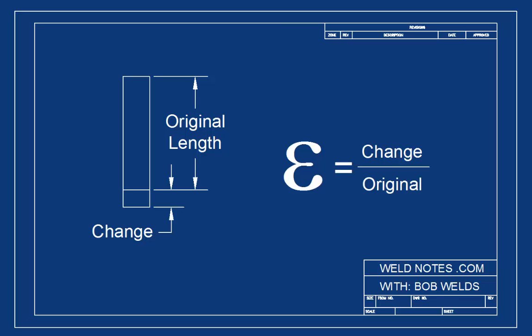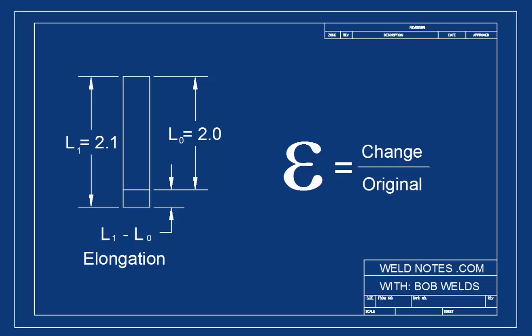Watch what happens to our units when we do that division. We'll start by using inches. Here's our original length 2.0 inches. We'll call that L sub zero or L naught. When we apply the load the bar is stretched to 2.1 inches long and we'll call that new length L1. The change in length is the difference between our new length and the original length. That is the length of the stretching. Another name for this change of length is elongation.